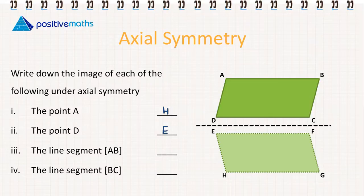The line segment AB is going to fall on the line segment HG. And the line segment BC is going to fall on the line segment GF.